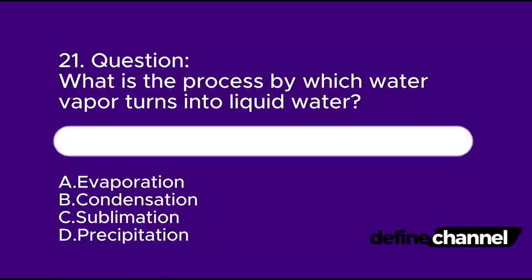Question 21. What is the process by which water vapor turns into liquid water? A. Evaporation. B. Condensation. C. Sublimation. D. Precipitation. Which is the correct answer?